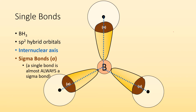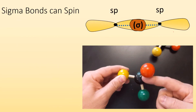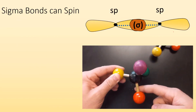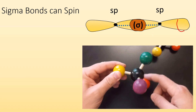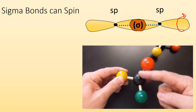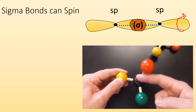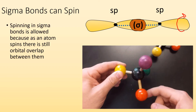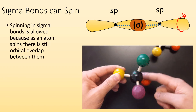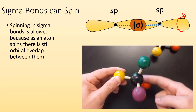A single bond is almost always going to be a sigma bond — it's going to occur directly in between the two nuclei. So sigma bonds can spin. Since they line up along the internuclear axis, if you were to spin either one of those atoms, that'll still overlap in the center. Spinning in sigma bonds is allowed because as it spins, the orbital overlap is still maintained.